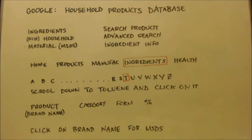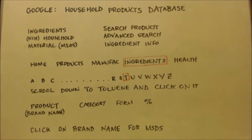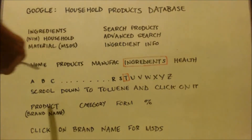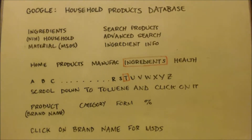You click on there — Household Products Database — and you'll see the home page with: home, products, manufacturer, ingredients. You click on 'Ingredients' and then you'll see the alphabet written out.